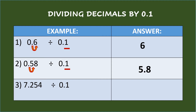Third example: seven and two hundred fifty-four thousandths divided by one-tenth. The divisor has only one decimal place, so move the decimal point of the dividend one place to the right and put the decimal point afterwards. So the answer is seventy-two and fifty-four hundredths.